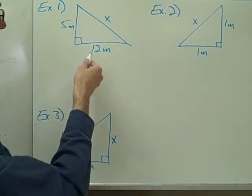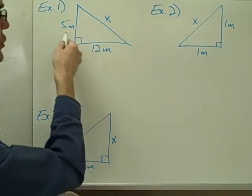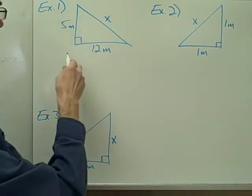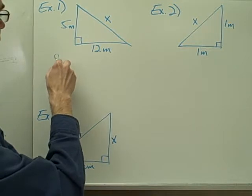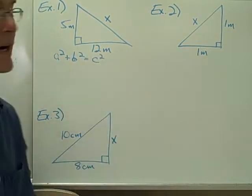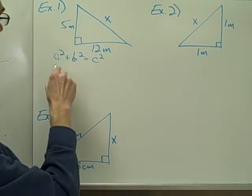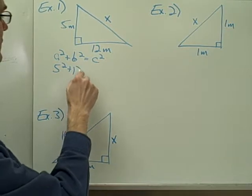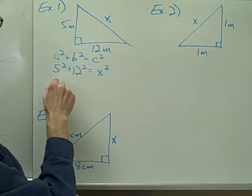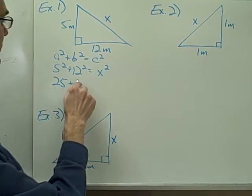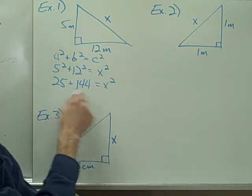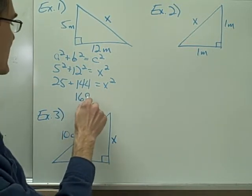Example number one: I have a right triangle. I know the lengths of the two legs, and I'm looking for the length of the hypotenuse. Since I know that in any right triangle the sum of the squares of the legs equals the square of the hypotenuse, I can plug in the values. Five squared plus twelve squared equals X squared. Five squared is twenty-five, twelve squared is one hundred forty-four.